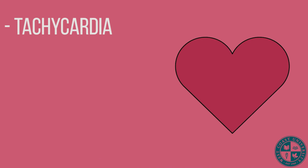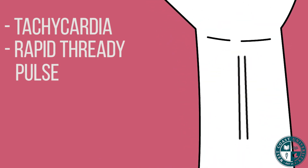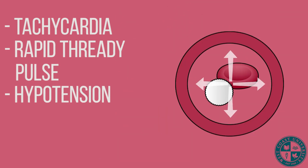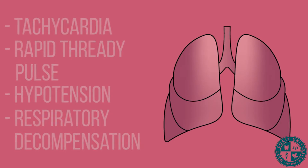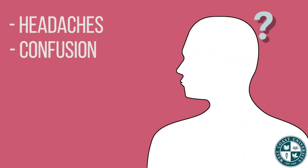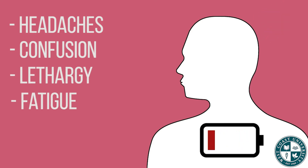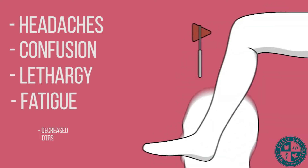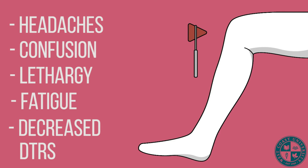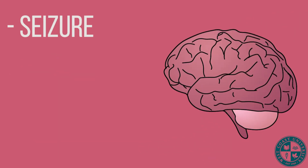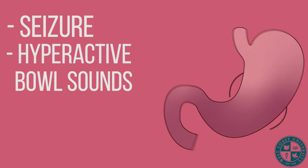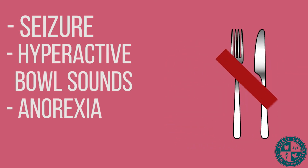What are our expected findings for the hyponatremia client? Well, they may have tachycardia, a rapid thready pulse, hypotension, respiratory decompensation due to muscle weakness, headaches, confusion, lethargy, and fatigue. They can have decreased DTRs, which are deep tendon reflexes. They could have a seizure leading all the way to a coma, hyperactive bowel sounds, anorexia, and vomiting.